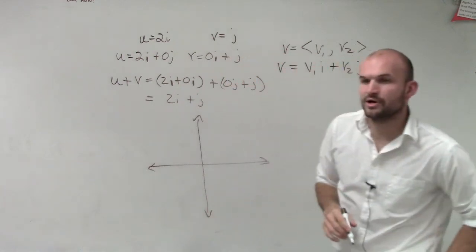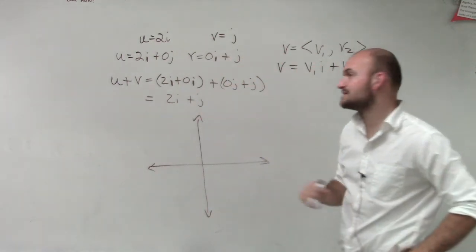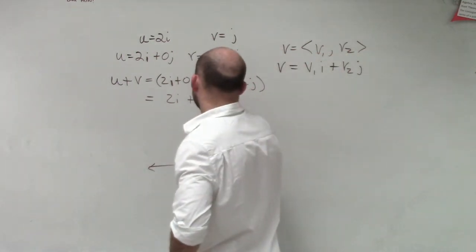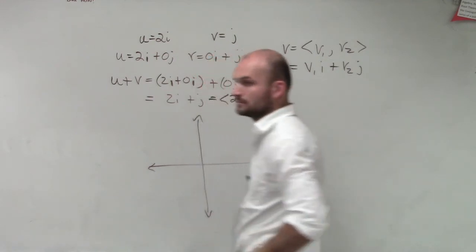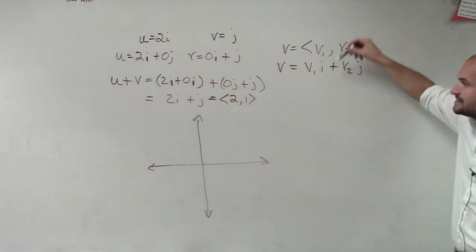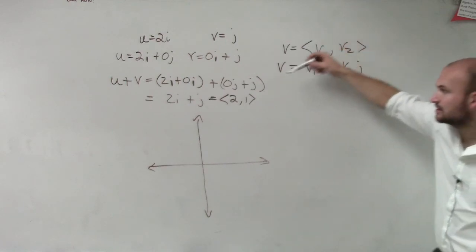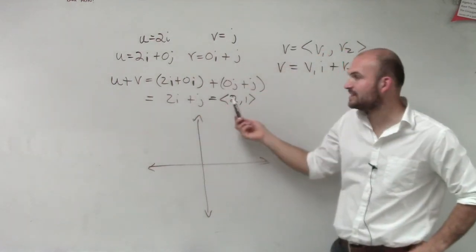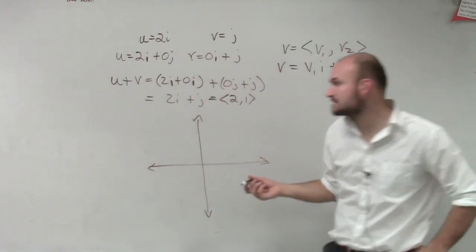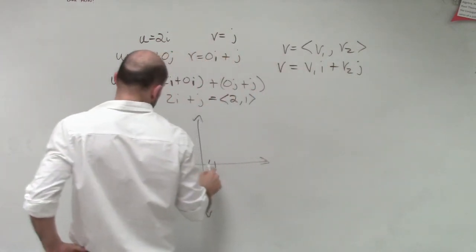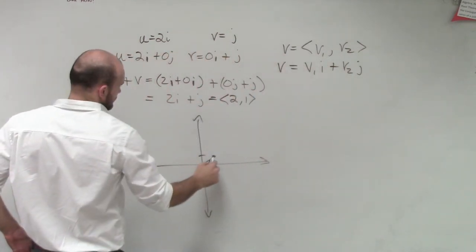Remember, this is the same thing as the component form of 2 comma 1, right? These are equal to each other. So this is the same thing as this as component form. So how do you sketch that? Go over 2, up 1.